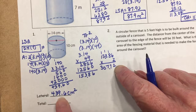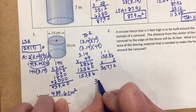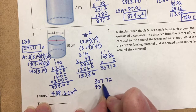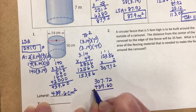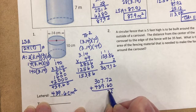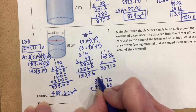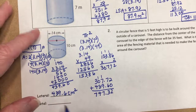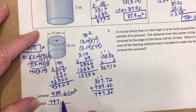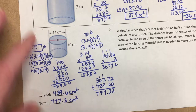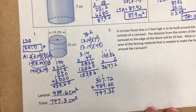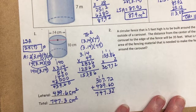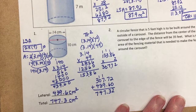Add the two circles (307.72) to the rectangle (439.6) to get the total surface area. The total, rounded to the nearest tenth, is 747.3 square centimeters. Make sure you're doing everything correctly and not leaving anything out.